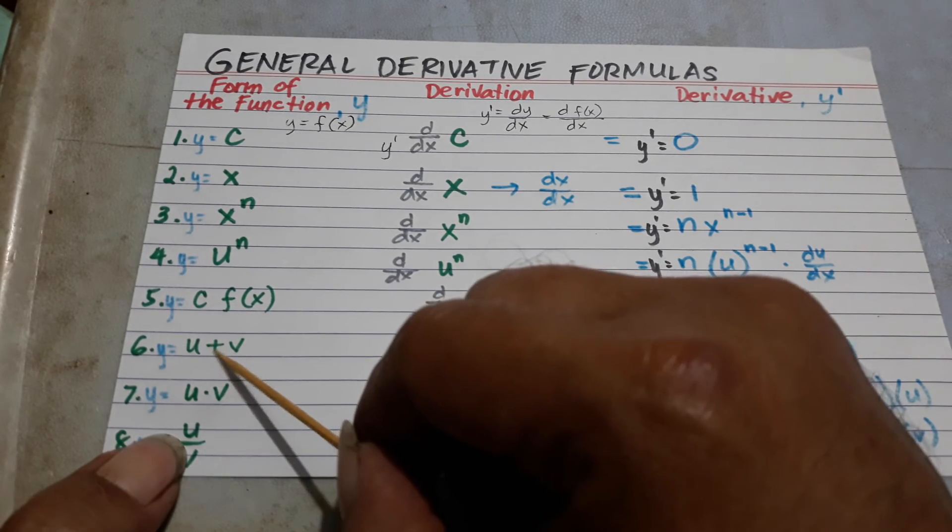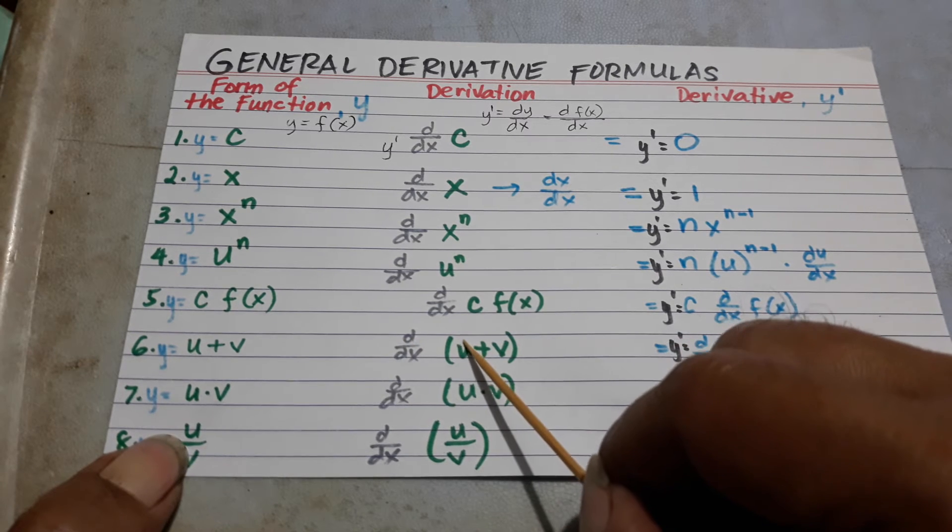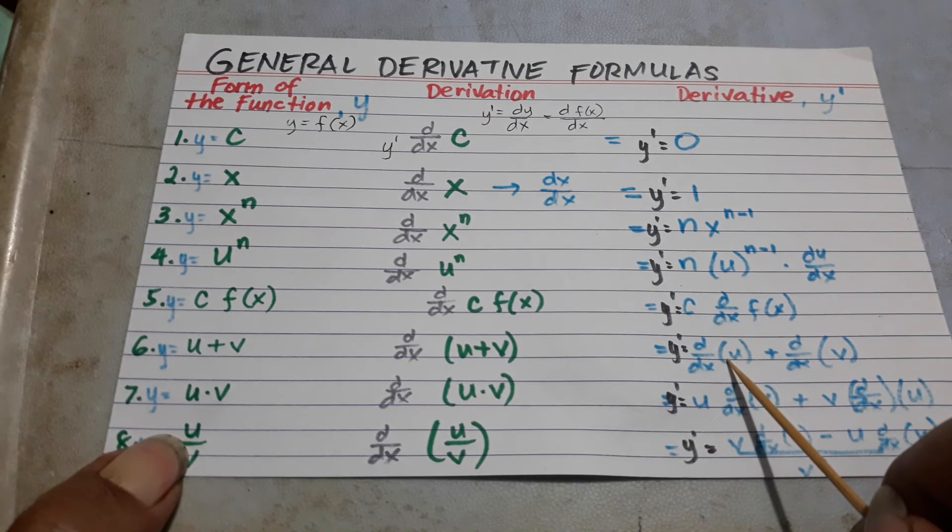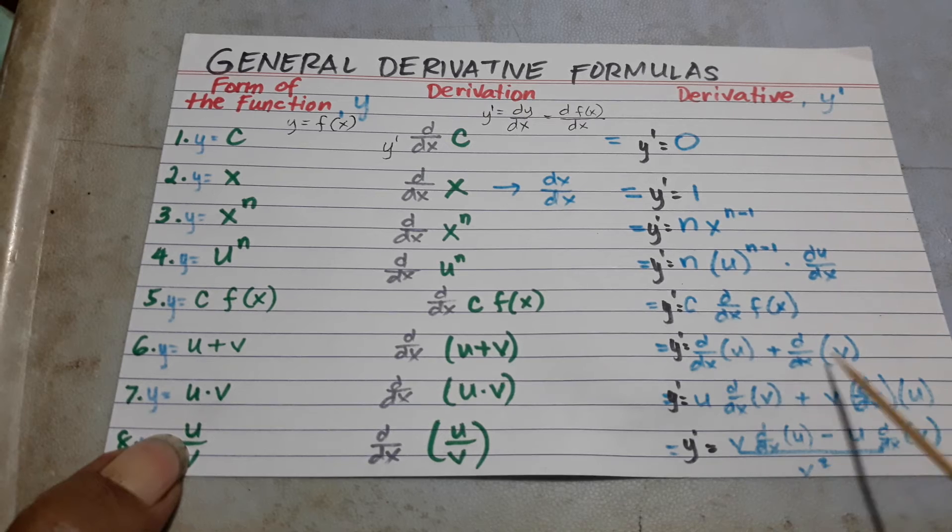The derivative of u plus v here, you just distribute this one, that is du over dx plus dv over dx.